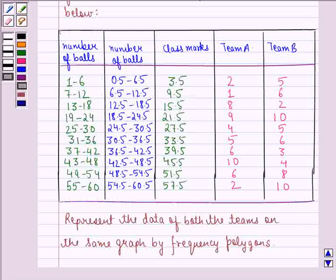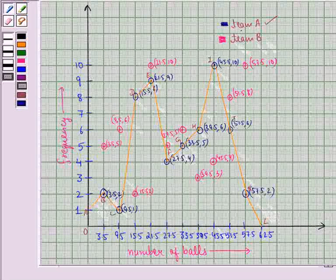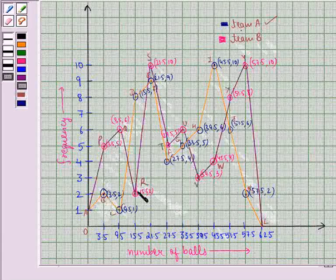Now we will again plot these points on the same graph and then we will join the points just like we have joined for team A. And that will be the frequency polygon for team B. So like this with the pink color we have plotted the points for team B. Now we will join all these points. So similarly we have named the frequency polygon for team B also by P, Q, R, S and so on.